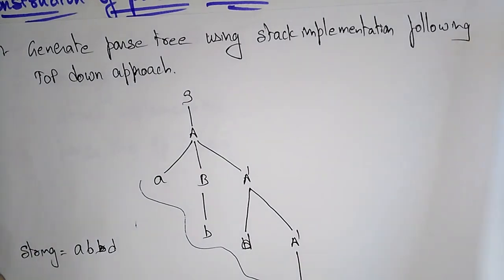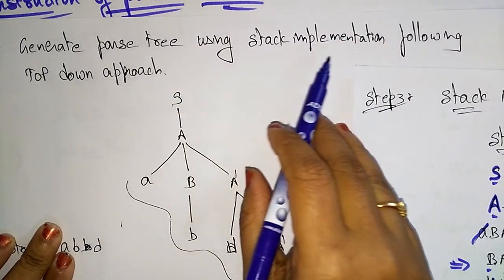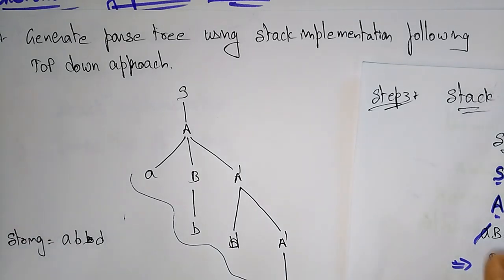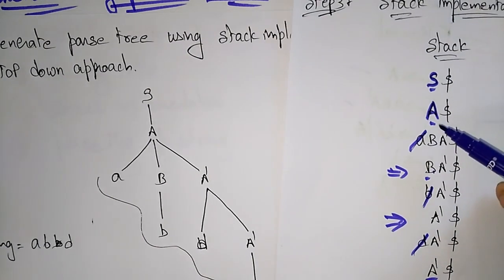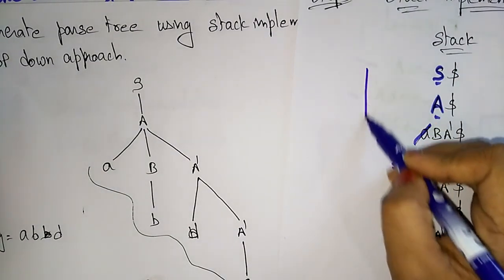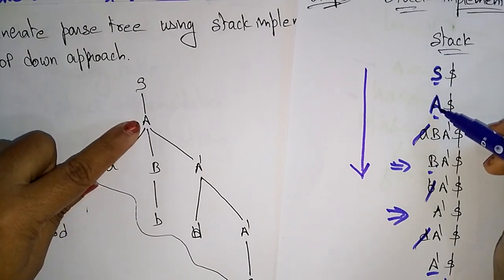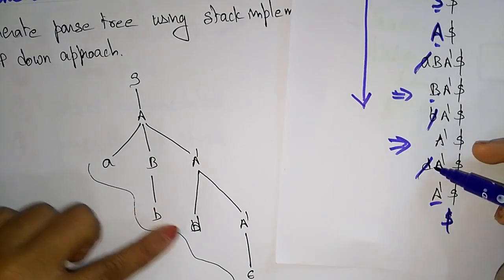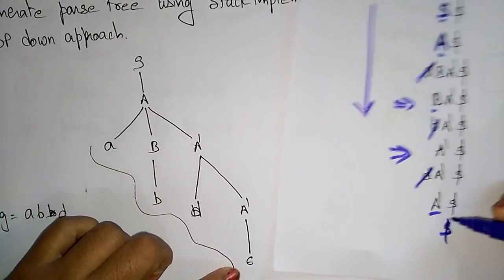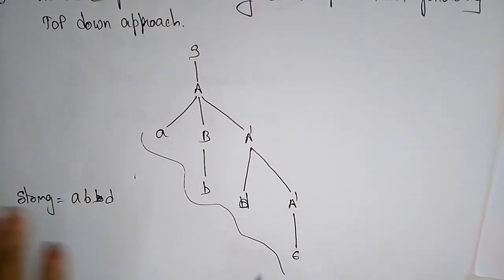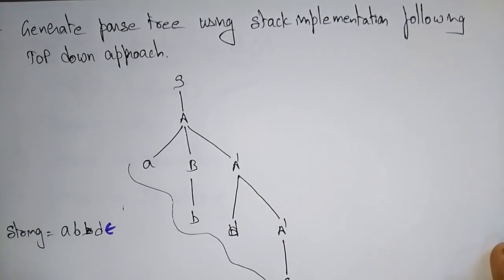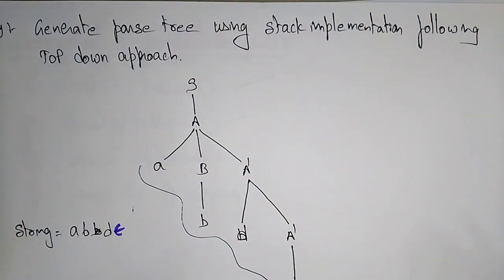The parse tree is generated by following the stack implementation using a top-down approach. The LL(1) predictive parser is a top-down processor. Starting from S: S→A, A→BA', B→b, A'→DA', A'→ε. The final derived string is 'abd' with epsilon. This is how you construct the LL(1) predictive parser. In the next video, another example will be covered.